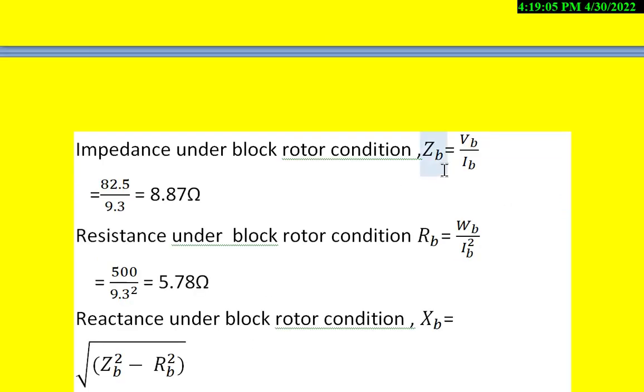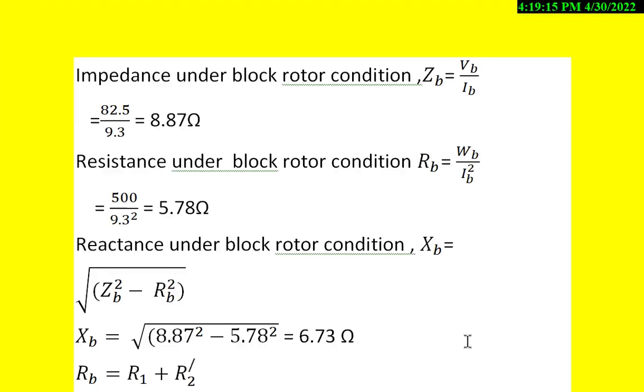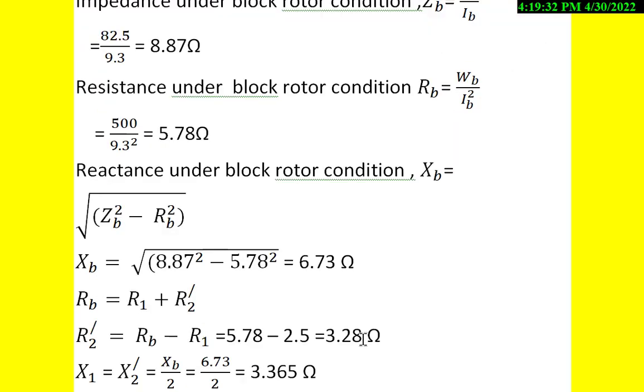Since ZB and RB are known, we can calculate the reactance under blocked rotor condition. XB = √(ZB² - RB²) = √(8.87² - 5.78²) = 6.73Ω.